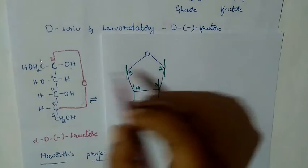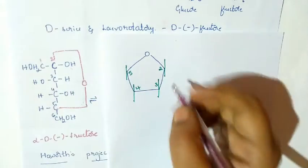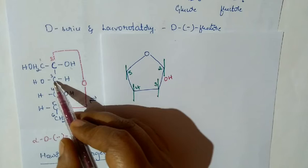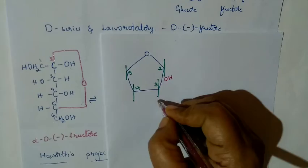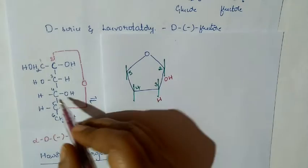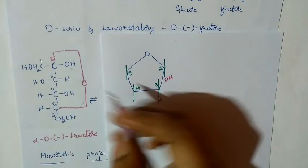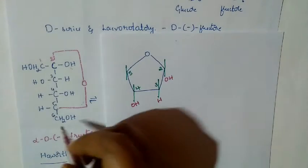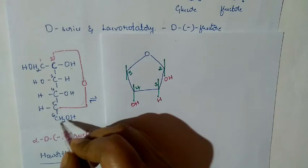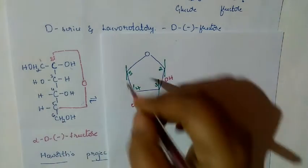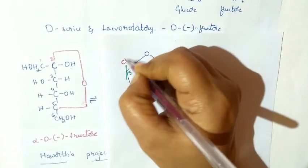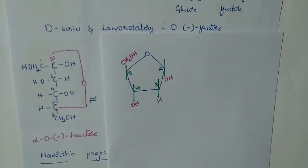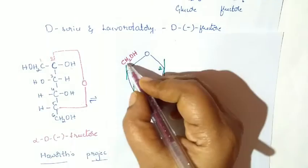If you check the second carbon, the OH group is on the right side, so it will be written below. For the third carbon, hydrogen is below. For the fourth carbon, OH is on the right side, so OH is below. For the fifth carbon atom, we can write CH₂OH directly — the sixth carbon atom will always be above.